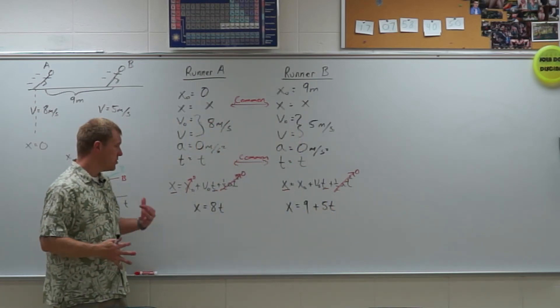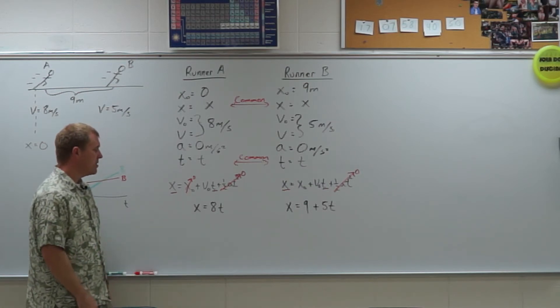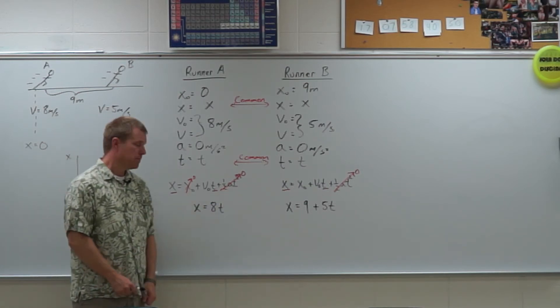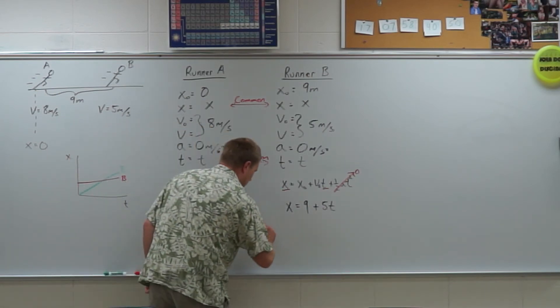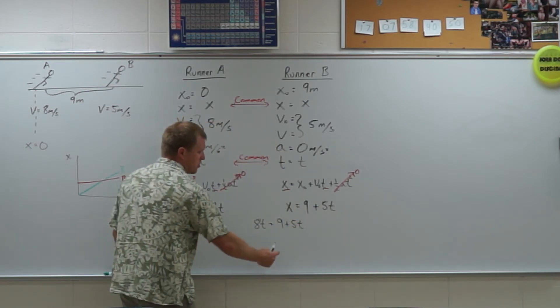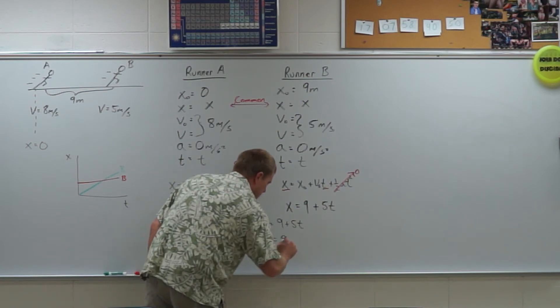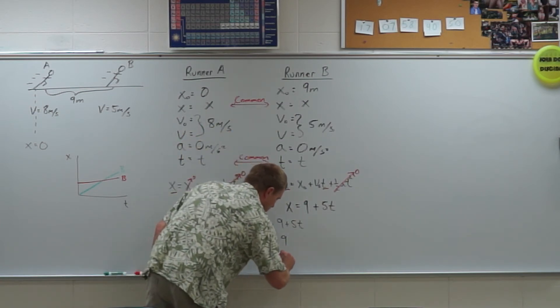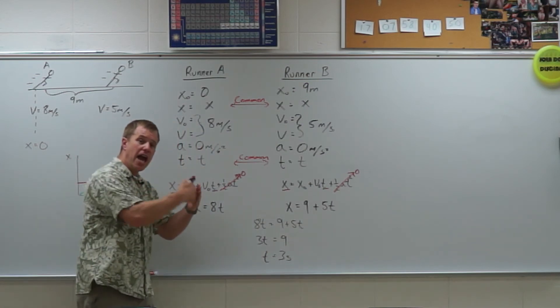And so now I have two equations, two unknowns. I should be able to solve this. So the first thing I'm going to do is I'm going to find out the time. So the time would be, set them equal to each other. So I have 8t is equal to 9 plus 5t. Subtract the 5t over. So I have 3t equals 9. So t is equal to 3 seconds. So 3 seconds after they start, runner A will catch runner B.